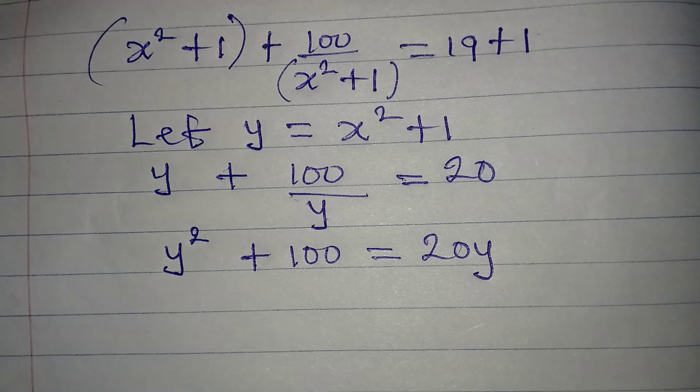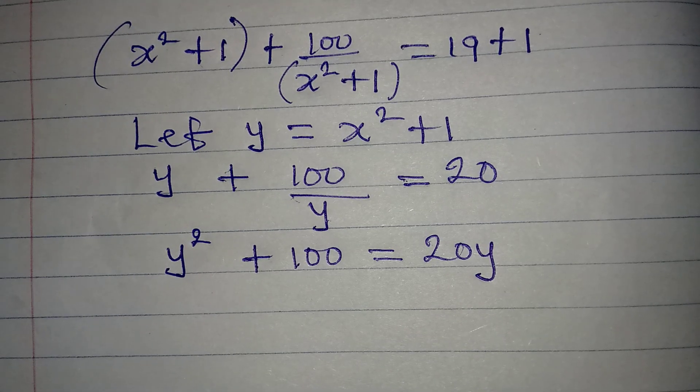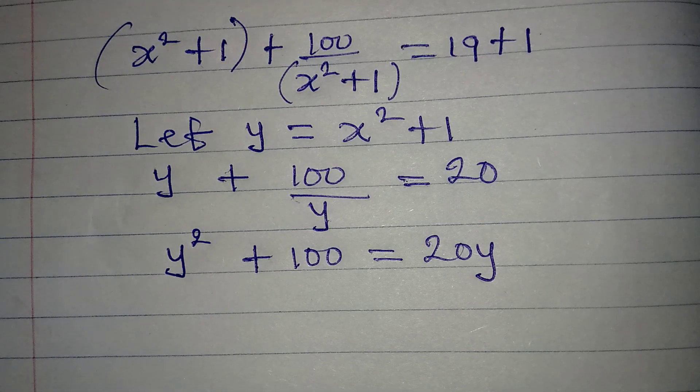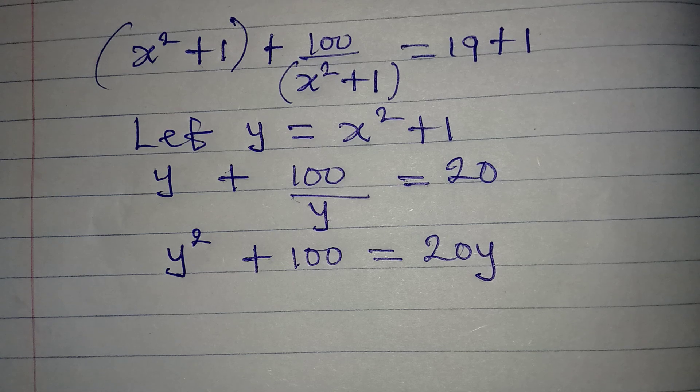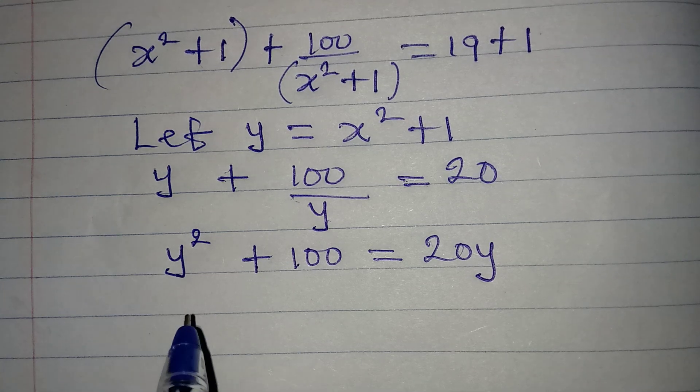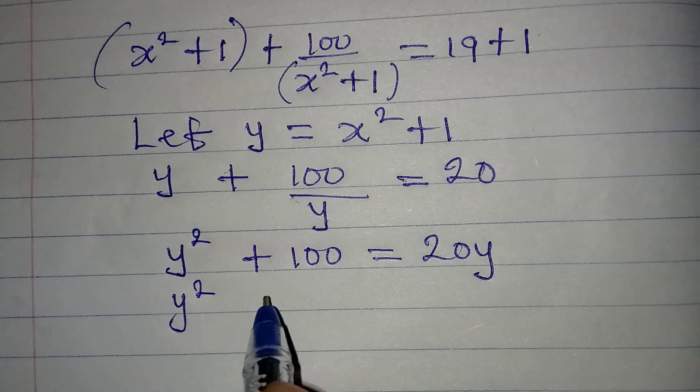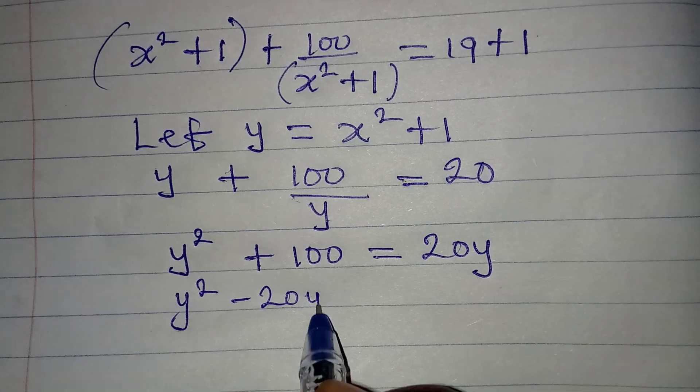Now we are having a quadratic equation. Let us arrange it properly so that we will have y squared minus 20y plus 100 equal to 0.